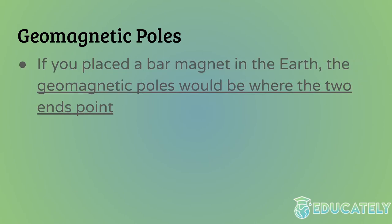So what are the geomagnetic poles? This is a bit more abstract. If you placed an imaginary bar magnet — a perfectly straight magnet with two magnetic ends — inside the Earth, the geomagnetic poles would be where the two ends of that magnet point.